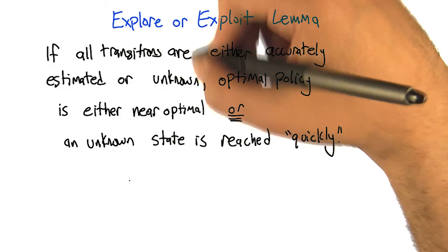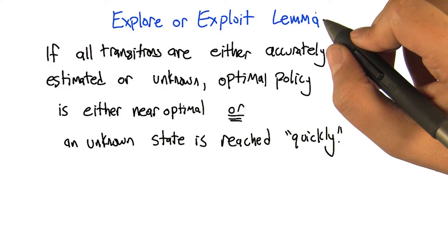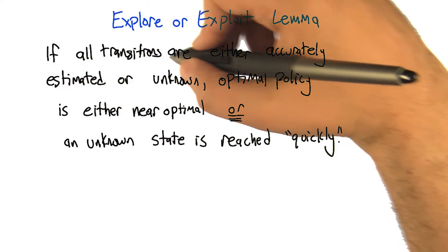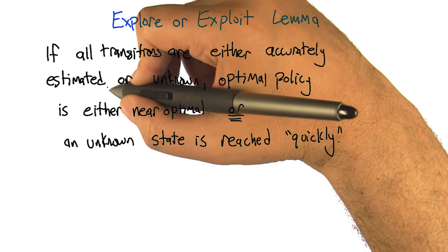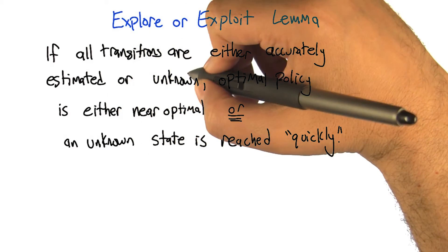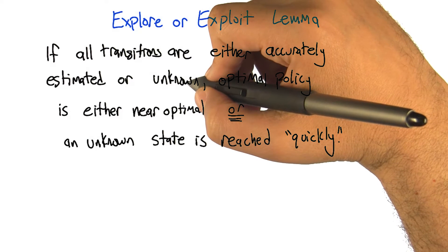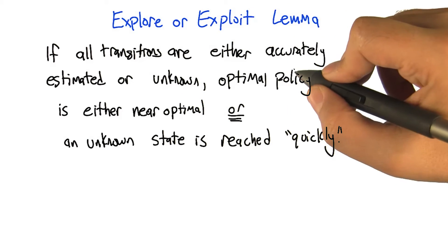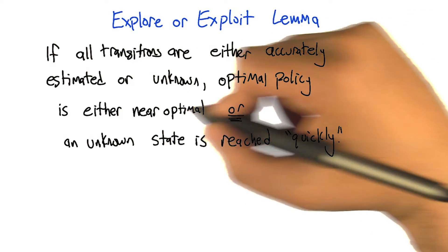And so the corresponding version of this in a stochastic domain is, okay, so let's say we're running RMAX and all the transitions are either accurately estimated or we mark them as unknown and we have an RMAX transition for those state action pairs. Then if we take that MDP and optimize it, that optimal policy is either near optimal.